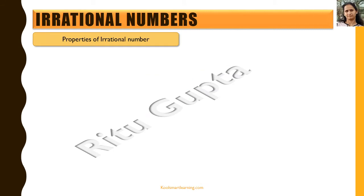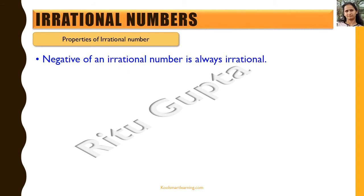Now let's talk about the different properties of irrational numbers. The first one is that the negative of an irrational number is always irrational. For example, if we have root 3 as an irrational number, then minus root 3, which is just its negative, is also irrational.